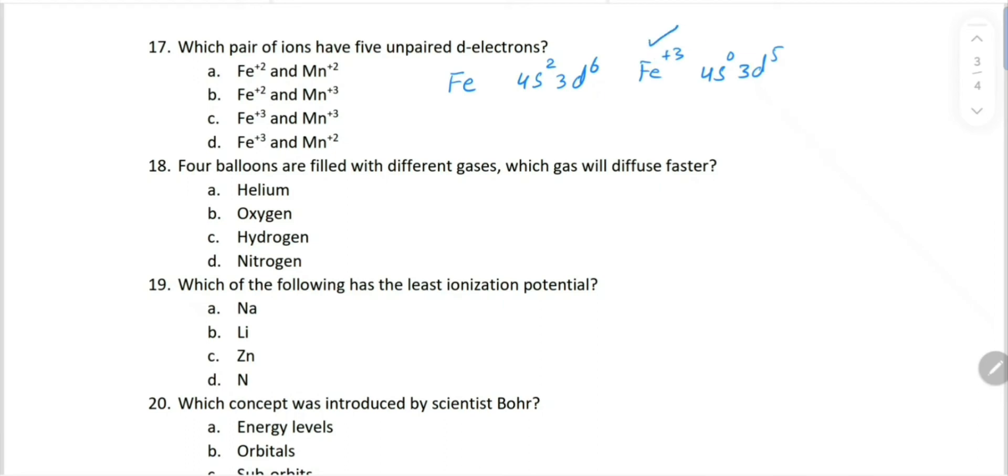In manganese's case, manganese is 4s² and 3d⁵. Now if manganese becomes Mn²⁺, it will lose d electrons and becomes 4s⁰ and 3d⁵. And again in d it will have 5 unpaired electrons. So Fe³⁺ and Mn²⁺ are our choice. Fe³⁺ and Mn²⁺, that is choice D.